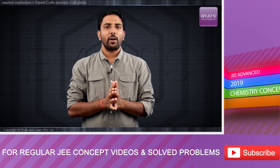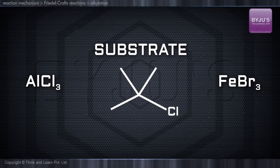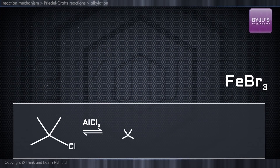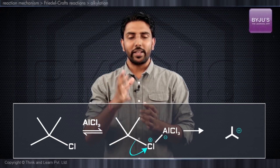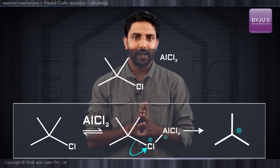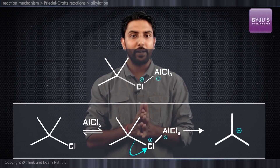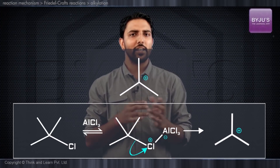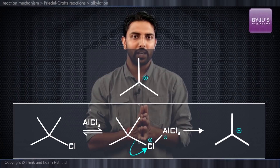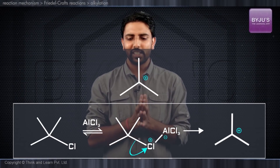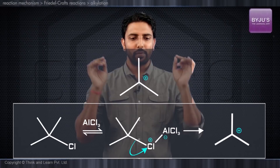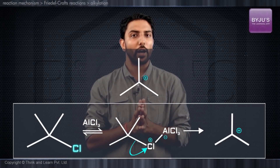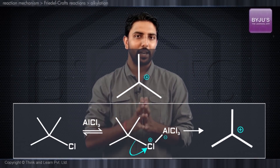For this, we employ the likes of anhydrous aluminum chloride or anhydrous ferric bromide. The anhydrous aluminum chloride acts as a Lewis acid and removes the chloride ion from the substrate, thus releasing a tertiary butyl cation, which now becomes a suitable electrophile. So from this carbon chain, the chloride ion is being removed and this becomes the electrophile.